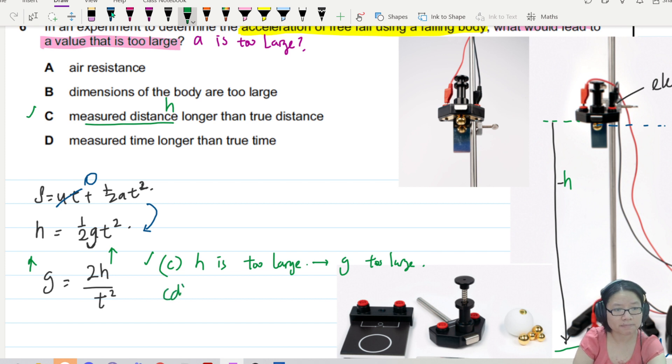What about D? T is too long. Longer than the true time. Measured time T from the timer. Maybe that's a calibration error. So this T square becomes big. What happens when the denominator is a bigger number? Then the value of G will be smaller. So G is too small. So this one is out.